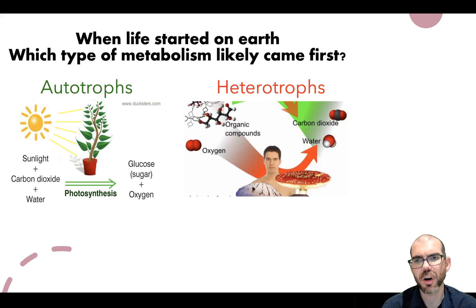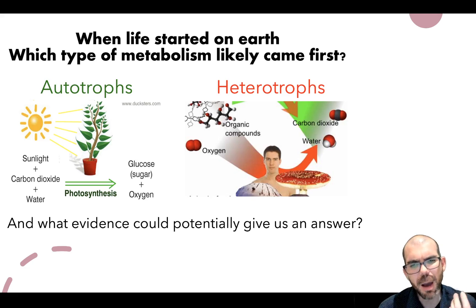A question I want us to start off with is, when life started on Earth, which type of metabolism likely came first? Was it the autotrophs or the heterotrophs? And what evidence could potentially give us an answer to this question?